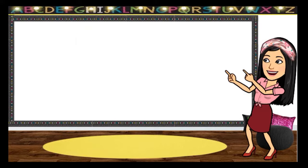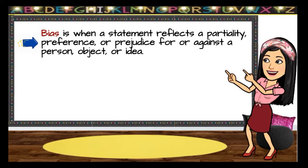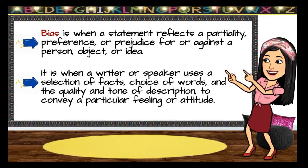What do we mean by bias? Bias is when a statement reflects a partiality, preference, or prejudice for or against a person, object, or idea. Bias is when a writer or speaker uses a selection of facts, choice of words, and the quality and tone of description to convey a particular feeling or attitude. An author shows bias by leaving out information or by altering facts to force the reader to have a certain opinion about a subject.